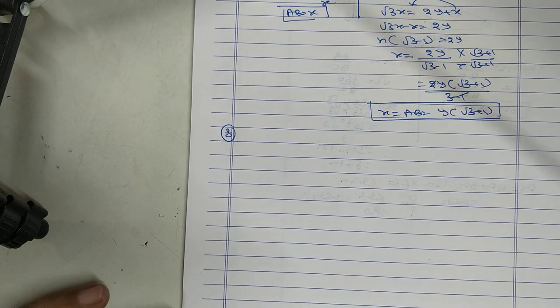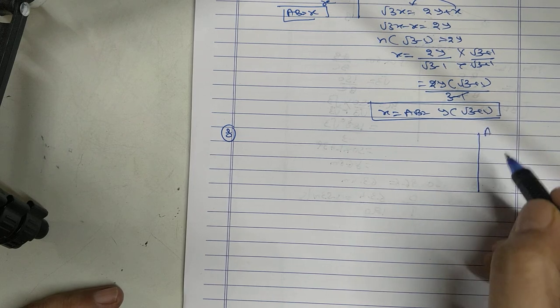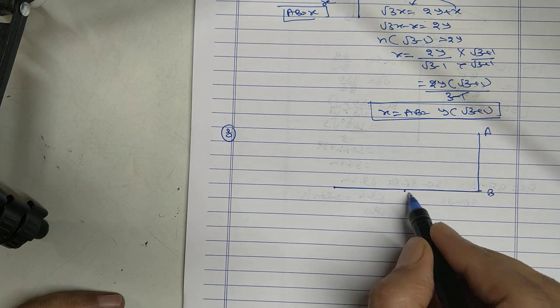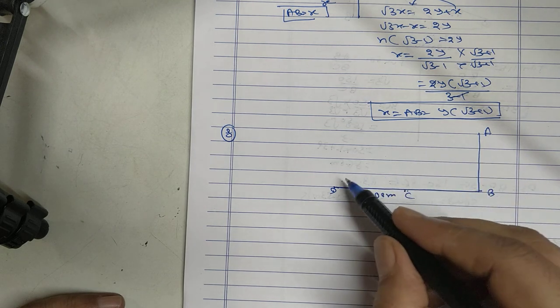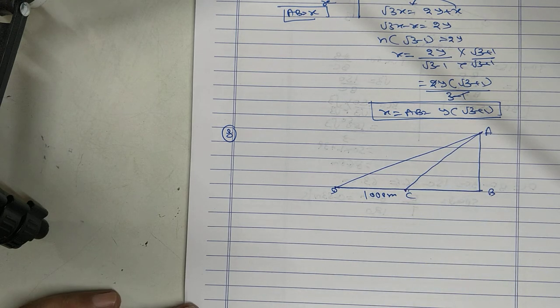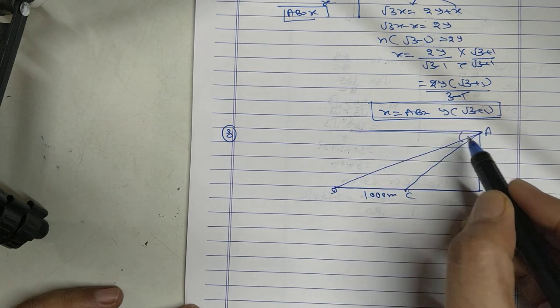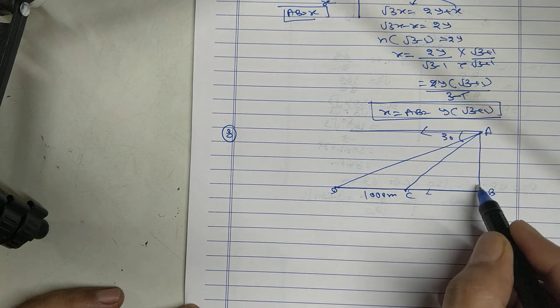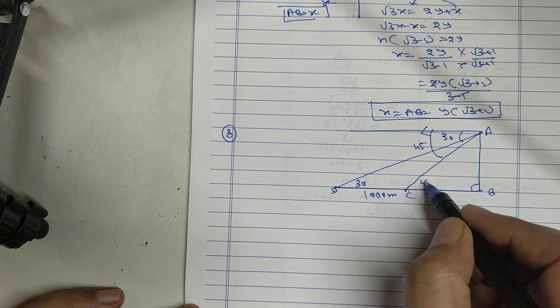Sum number 8, exactly similar sum. Sum number 8, this is the tower, two consecutive kilometer stone, distance between two stones is 1,000 meter. This is 30, this is also 30, this is 45, this is also 45.